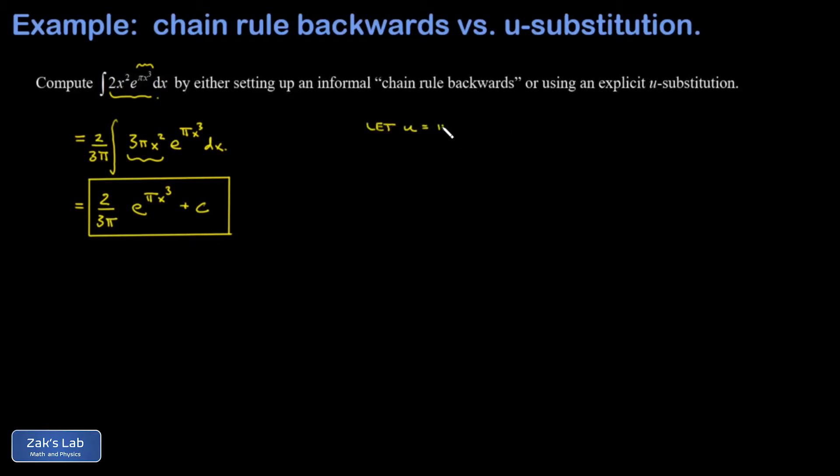We're going to let u be equal to the inner function πx³, and then du is 3πx² dx. When we look at our original integrand, we see that x² piece hanging around, and that's essential—we have to have that piece in order to build du.